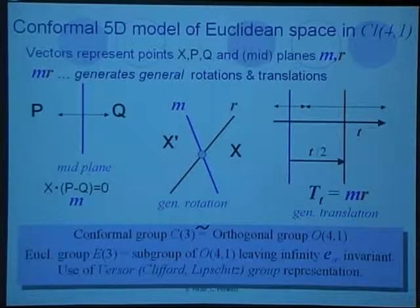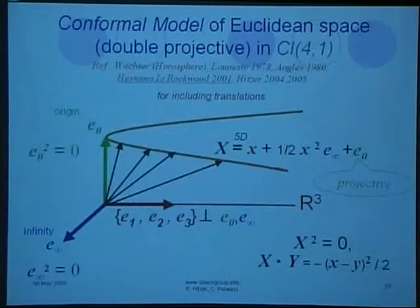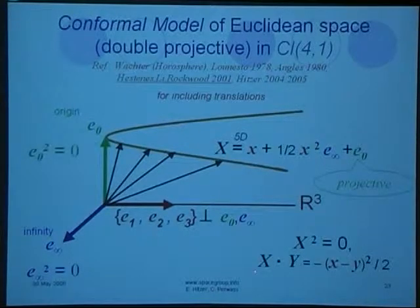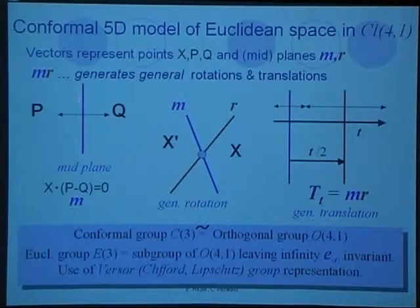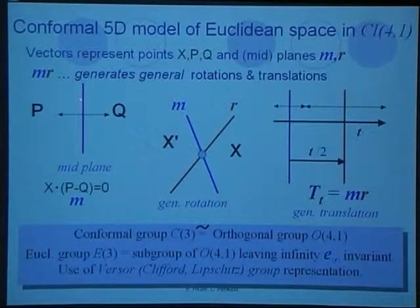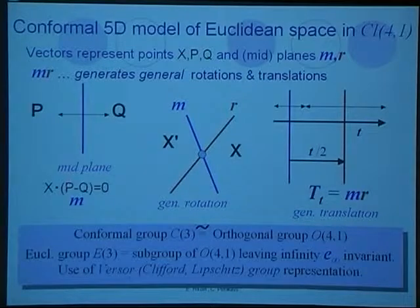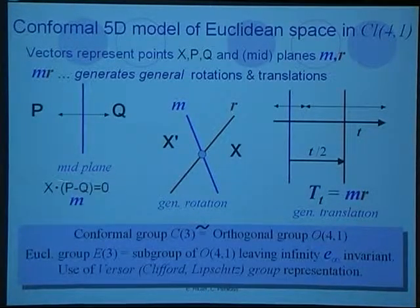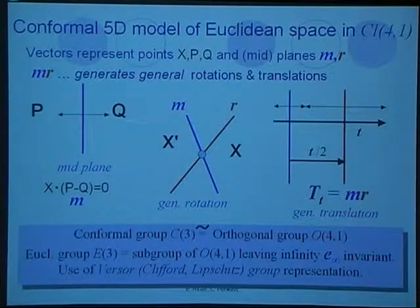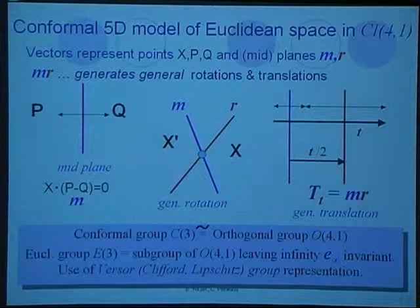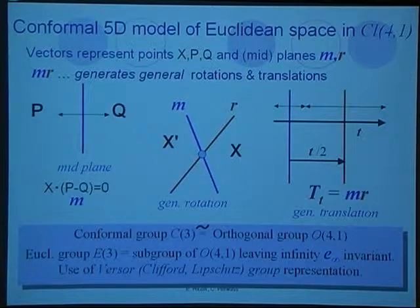We can easily express a plane with the condition that the inner product should be the same. If I have this plane here, any point on the plane has the same distance from P and from Q. So X times P equals X times Q under the inner product, and this gives us an equation for the plane. P minus Q is then the midplane called M between P and Q.